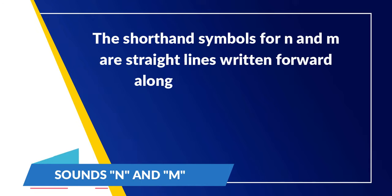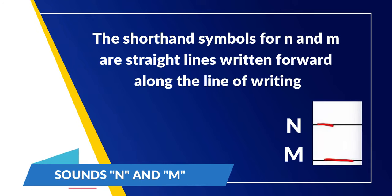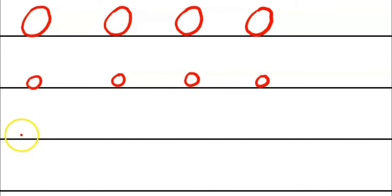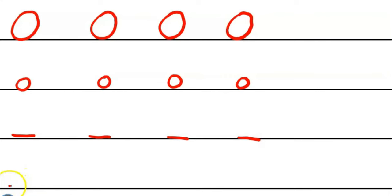The shorthand symbols for N and M are straight lines written forward along the line of writing. The N is a short straight line — let us try to write it. The M is a long straight line — again, let us try to write it down.